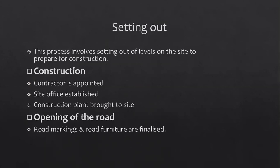When construction begins, a contractor is appointed, a site office is established, and construction plant is brought to the site. After everything is done the road is opened — road markings and road furniture are finalized. Please read up on this in Chapter 3 of your handbook because there is a lot more detail; this whole chapter is something you need to double-check in your book as well.